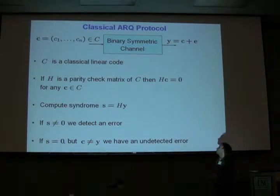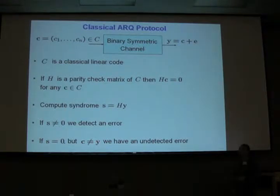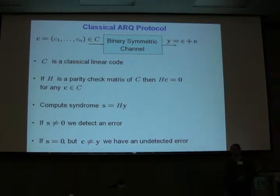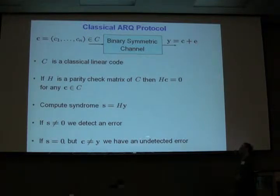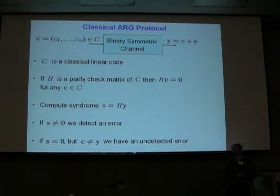But sometimes the error could be so bad that the syndrome is 0, and at the same time the transmitted codeword C and received Y are still different. This event is called an undetected error. We're interested to estimate the probability of this undetected error, because it's really bad — we think everything is fine, but actually everything is not fine.